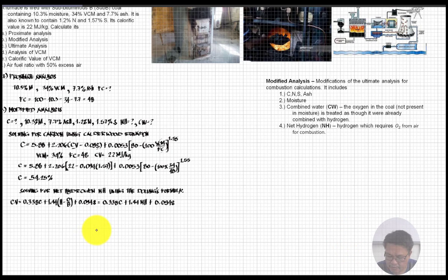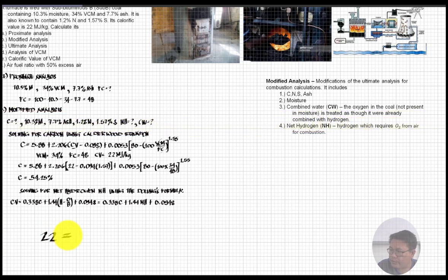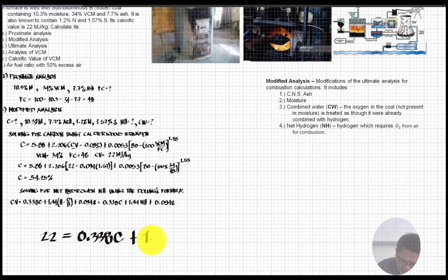Substituting the known values: the calorific value is 22 megajoules per kilogram, carbon is 54.25 percent, sulfur is 1.57 percent. So: 22 = 0.338 × 54.25 + 1.44 × (net hydrogen) + 0.094 × 1.57. We then solve for the net hydrogen from this equation.